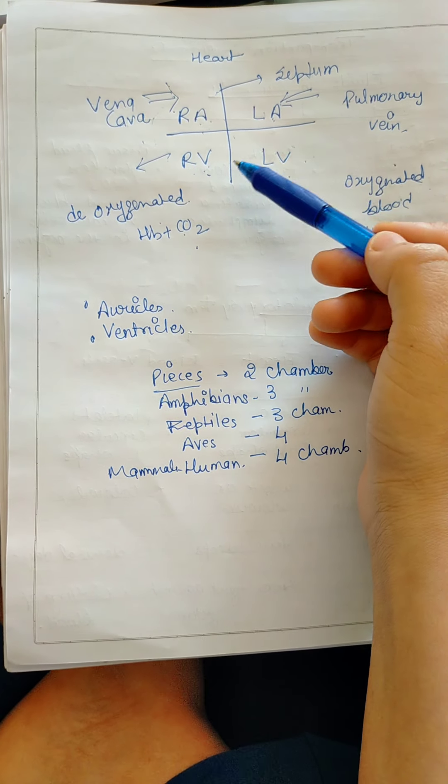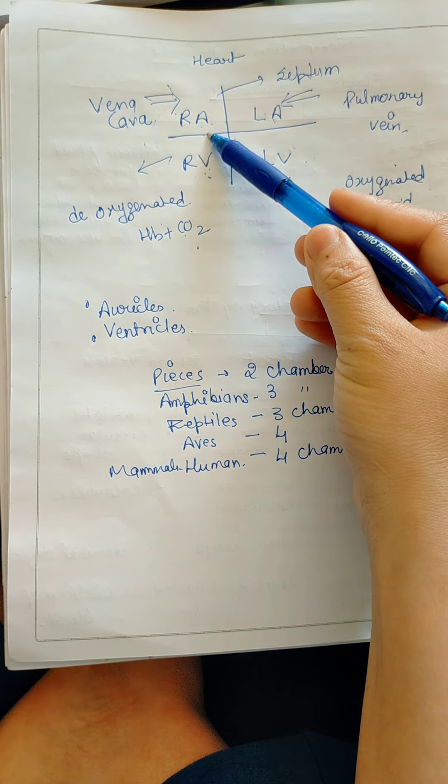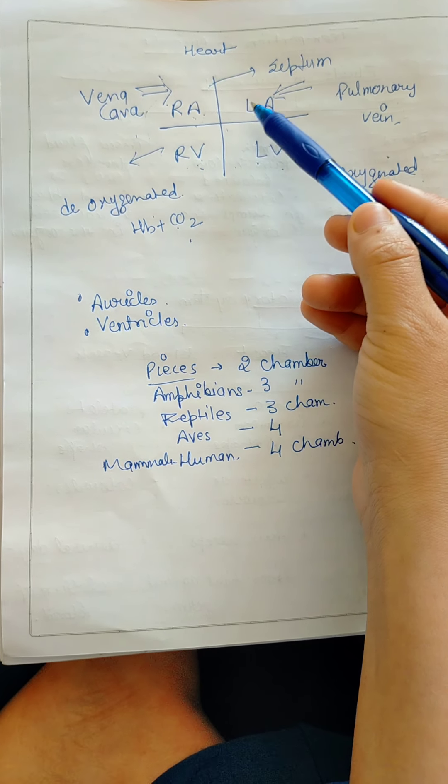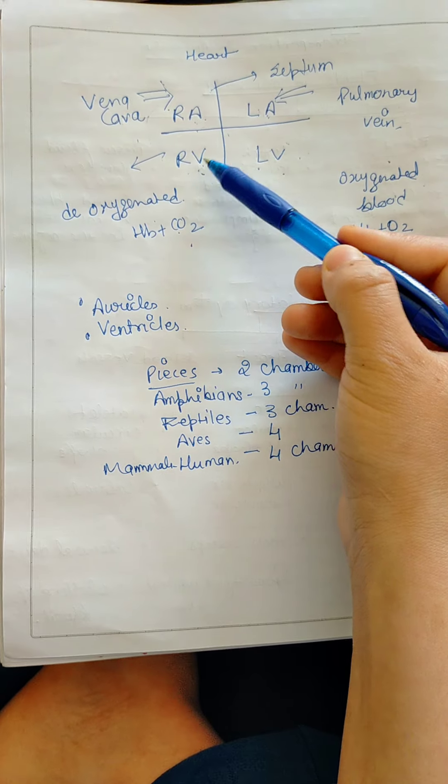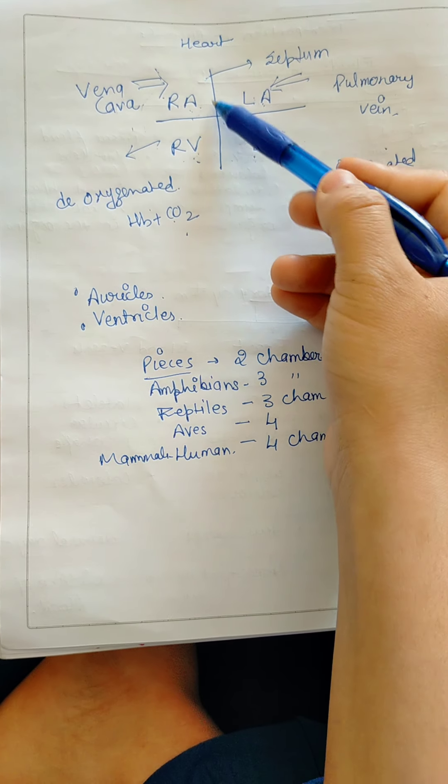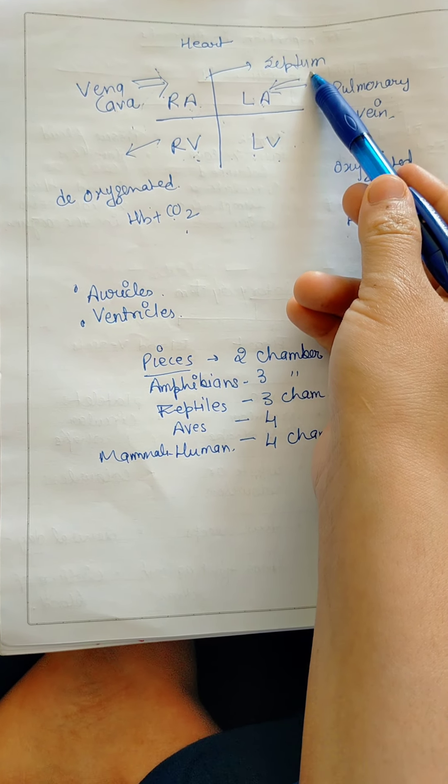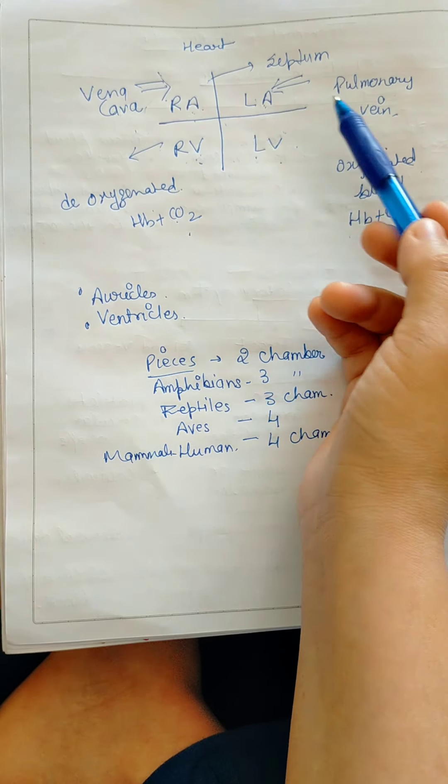We have 4 chambers of heart and that is the upper chamber is the right atria and left atria. Lower chambers are the right ventricle and left ventricle. These are separated from the septum. And why is the septum separated?